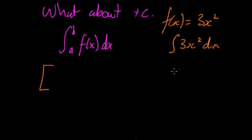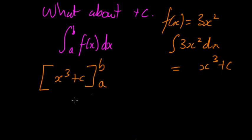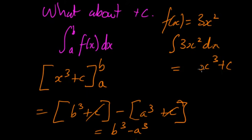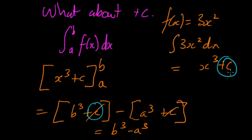Integrating 3x squared dx gives us x cubed plus C. So when we evaluate from a to b we get x cubed plus C evaluated at b, minus x cubed plus C evaluated at a. Whatever the C value is, we get C minus C and they cancel. So the answer is just b cubed minus a cubed. The plus C will not affect the area — that's often why we just leave it out.